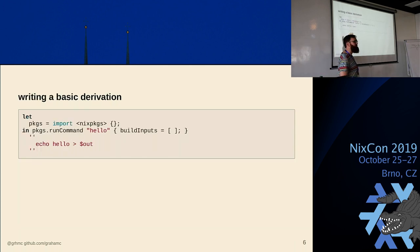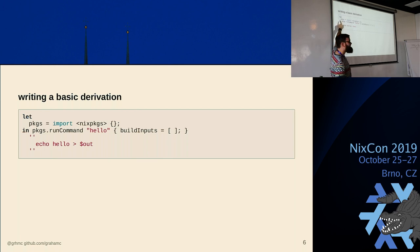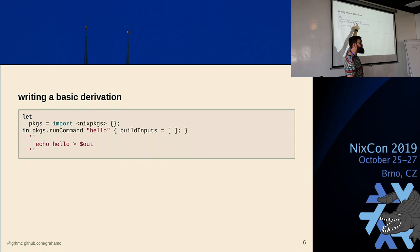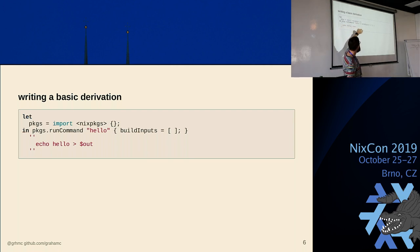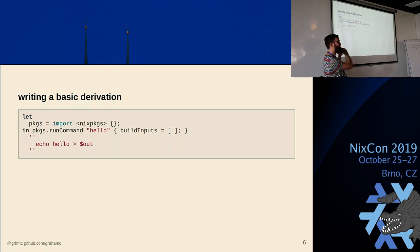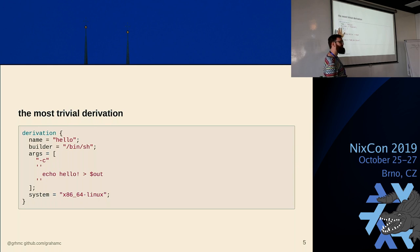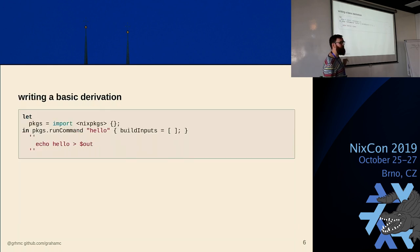This is more familiar if you've used Nix packages — probably closer to what you're writing. We use a let-in construct, import nixpkgs, and then use the runCommand attribute from nixpkgs. We call it hello and echo hello to out. This is how you would implement this in nixpkgs itself.